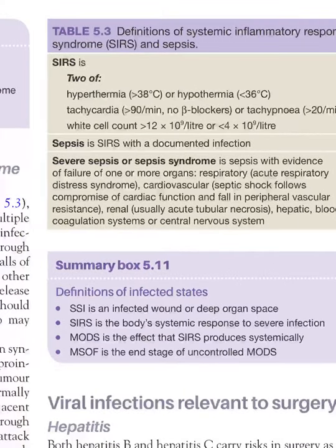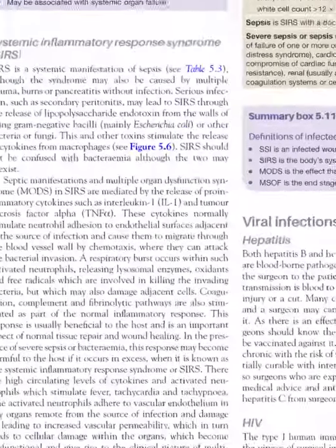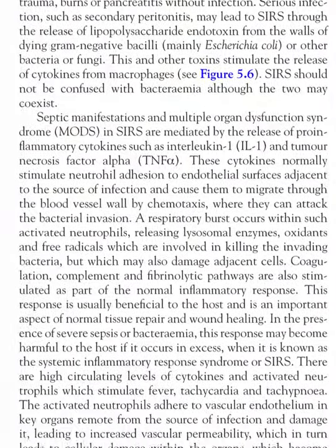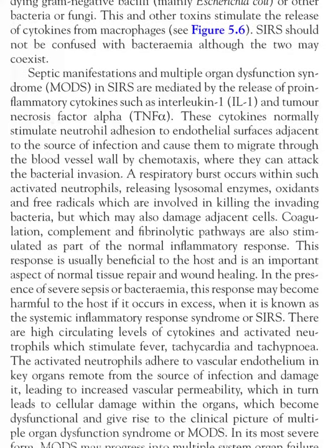SIRS can be defined as the presence of any two of: hyperthermia more than 38°C or hypothermia less than 36°C, tachycardia greater than 90 beats per minute, tachypnea greater than 20 breaths per minute, and white cell count more than 12,000 or less than 4,000. Sepsis means there is a source plus SIRS. Severe sepsis means there is any organ dysfunction.